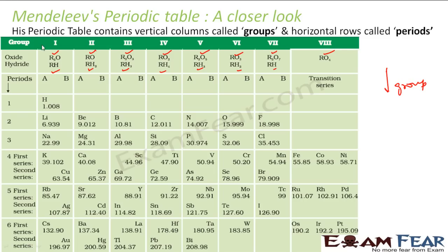So group one, group two, group three — these were the groups. And horizontal rows were called periods. He used the words groups and periods, which are also used in the modern periodic table.